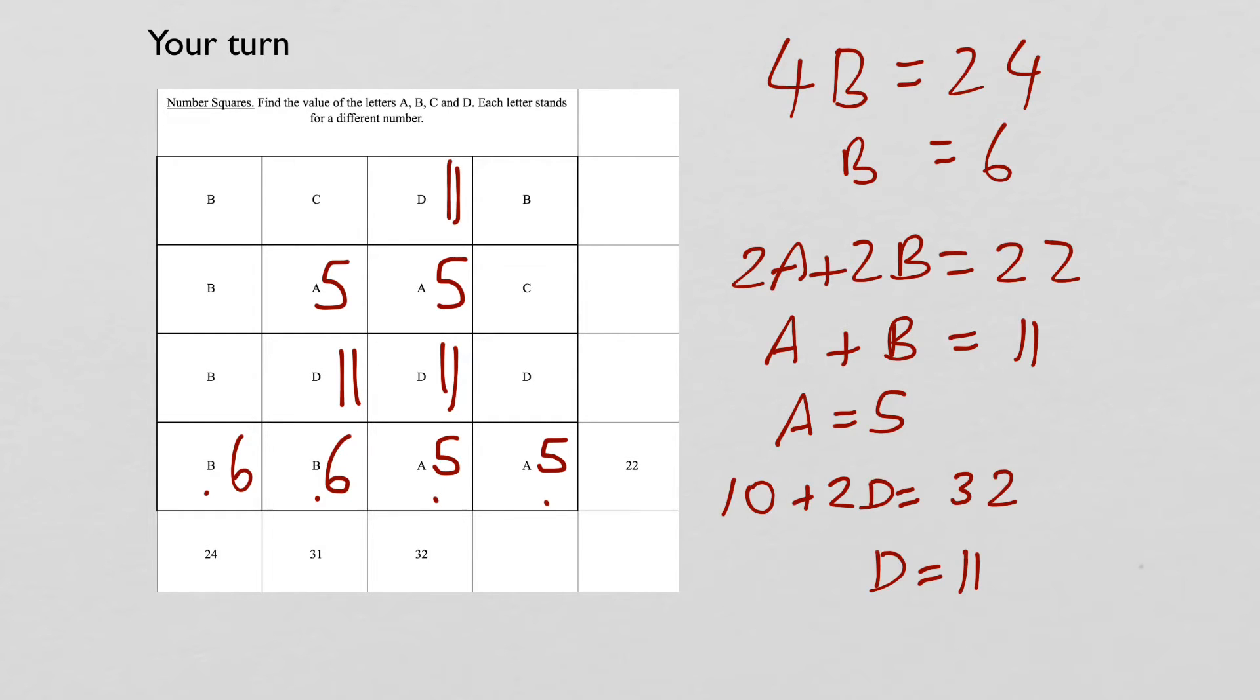And then we can go into the last column down here to find c. 5 plus 11 is 16, plus 6 is 22. The difference between 22 and 31 is 9. So c plus c equals 9. Well done if you got those correct.